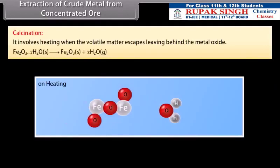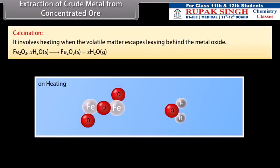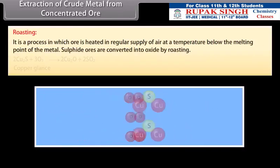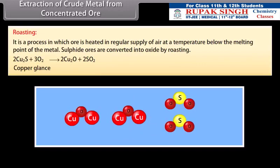Calcination: It involves heating when the volatile matter escapes leaving behind the metal oxide. Roasting: It is a process in which ore is heated in regular supply of air at a temperature below the melting point of the metal. Sulphide ores are converted into oxide by roasting.